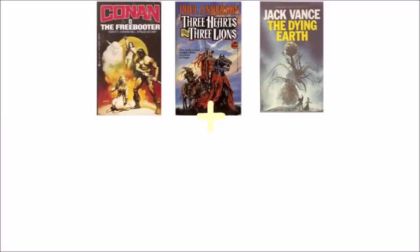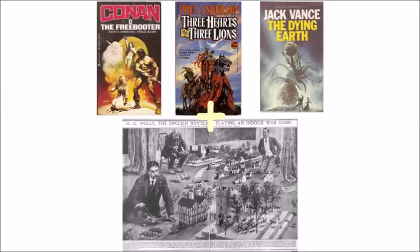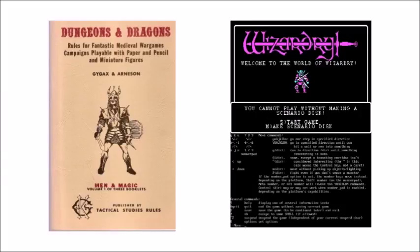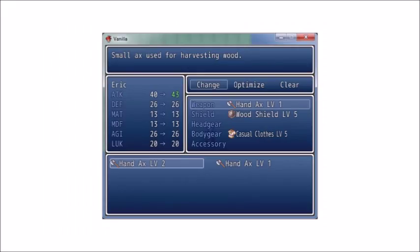Now onto role-playing games. For role-playing games, we'll be taking the definition back to its infancy when it was first created. Role-playing games, as we know them today, were birthed from a love of speculative fiction — such as Howard's Conan the Barbarian, Jack Vance's Dying Earth, and Poul Anderson's Three Hearts and Three Lions — combined with a love of war games. This led to the creation of modern tabletop role-playing games, such as Dungeons & Dragons, the precursor to the video role-playing game.